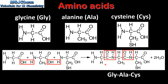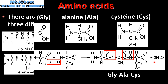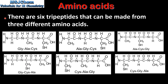In a tripeptide, which is made from three amino acids, we have two peptide bonds formed and two molecules of water. There are six tripeptides that can be made from three different amino acids. Here we have the structures of the six tripeptides that can be made from the three amino acids we saw in the previous slide. In each tripeptide, the sequence of the amino acids — which is the primary structure — is different.